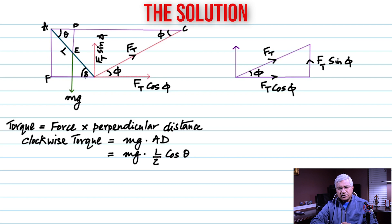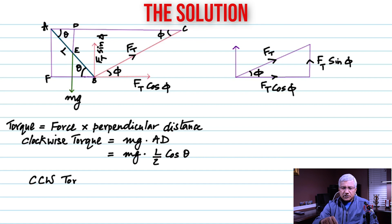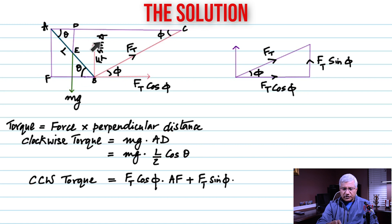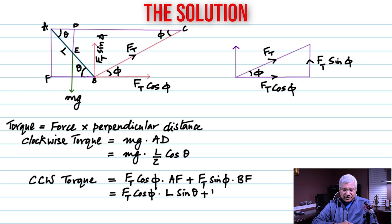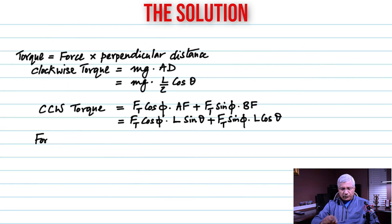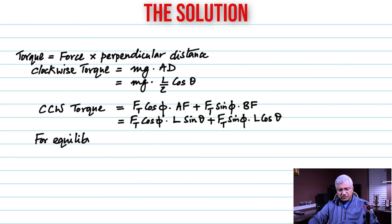I've drawn the triangle now, and that angle is also theta. For the counterclockwise torques: FT cosine phi times AF, plus FT sine phi times BF. AF is the perpendicular distance for the cosine component, and BF is the perpendicular distance for the sine component. AF = L sine theta, because AF is the opposite side, and BF = L cosine theta.